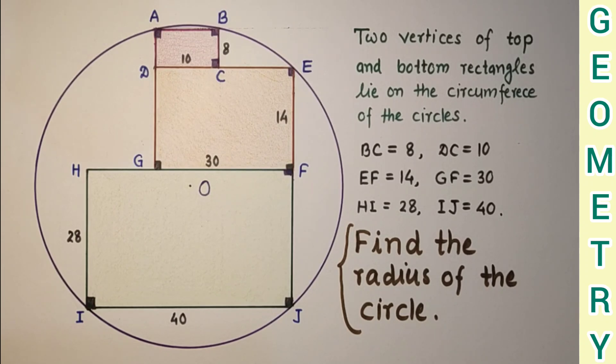In today's question we are given a circle whose center is O. These three rectangles are drawn as shown in the figure and their dimensions are given.